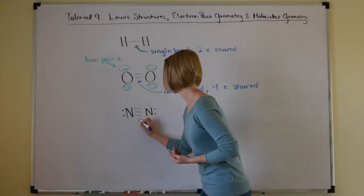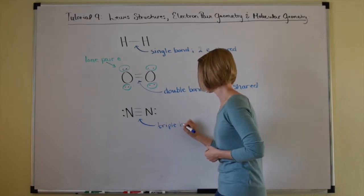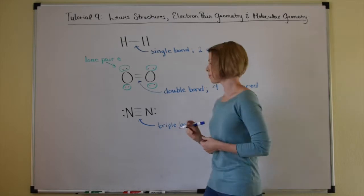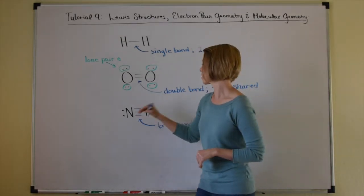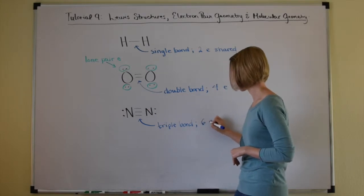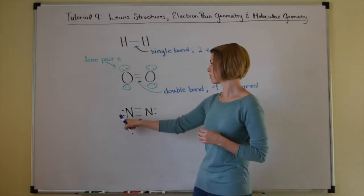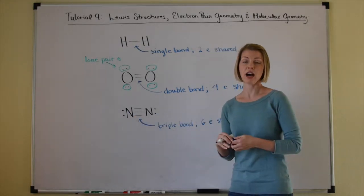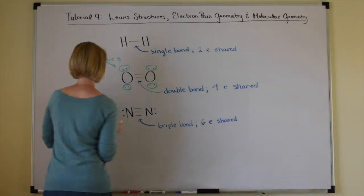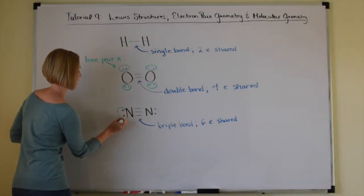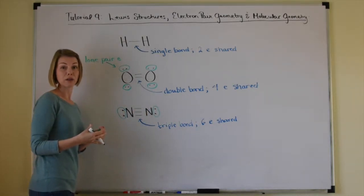I'm going to label this a triple bond. Each line represents two electrons, so that's six electrons being shared. Nitrogen also has lone pair electrons — those are electrons that are not being shared with another atom.